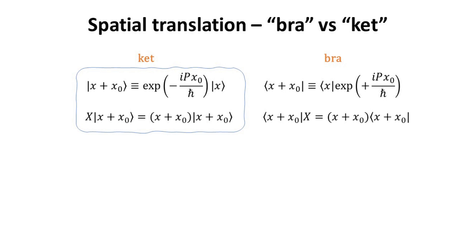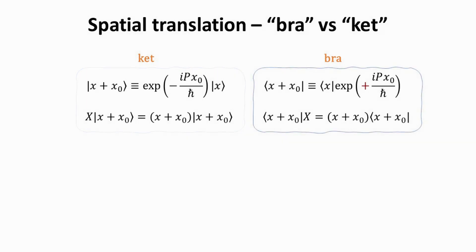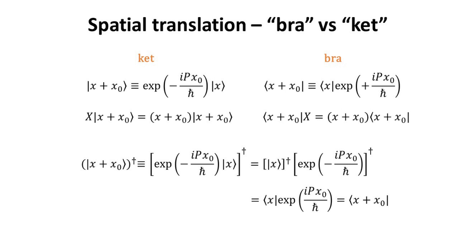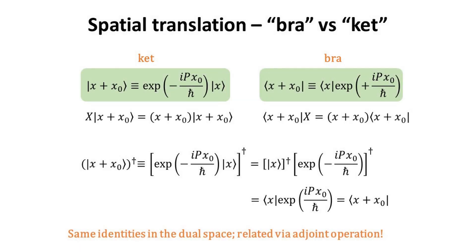Let's recap. For the ket, the operator exp(−ip·x_0/ℏ) translates the position eigenstate to |x + x_0⟩. For the bra, to perform the translation from x to x plus x_0, we need to flip the sign of the exponent. We can see why: beginning with the translation equation for the ket and taking the adjoint, the adjoint of the translation operator flips the sign of the exponent, and the adjoint of the ket turns into a bra. Thus, the two translation operations for the bra and ket are the same identities related via the adjoint operation — they are duals of one another.